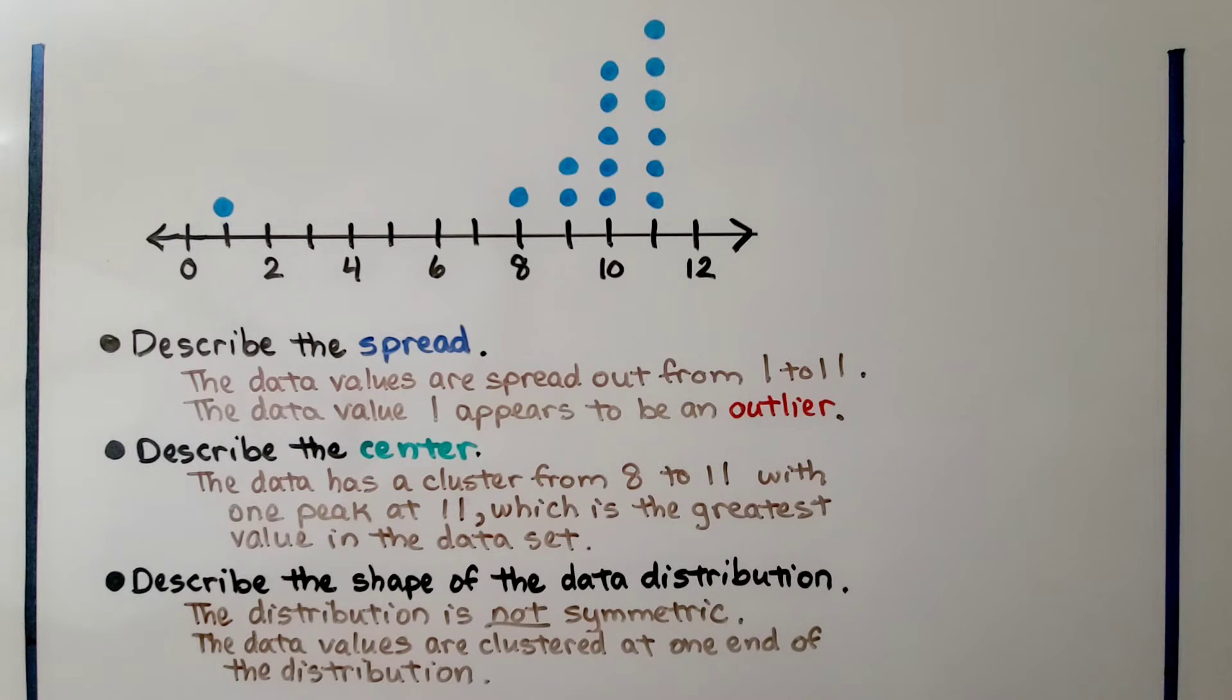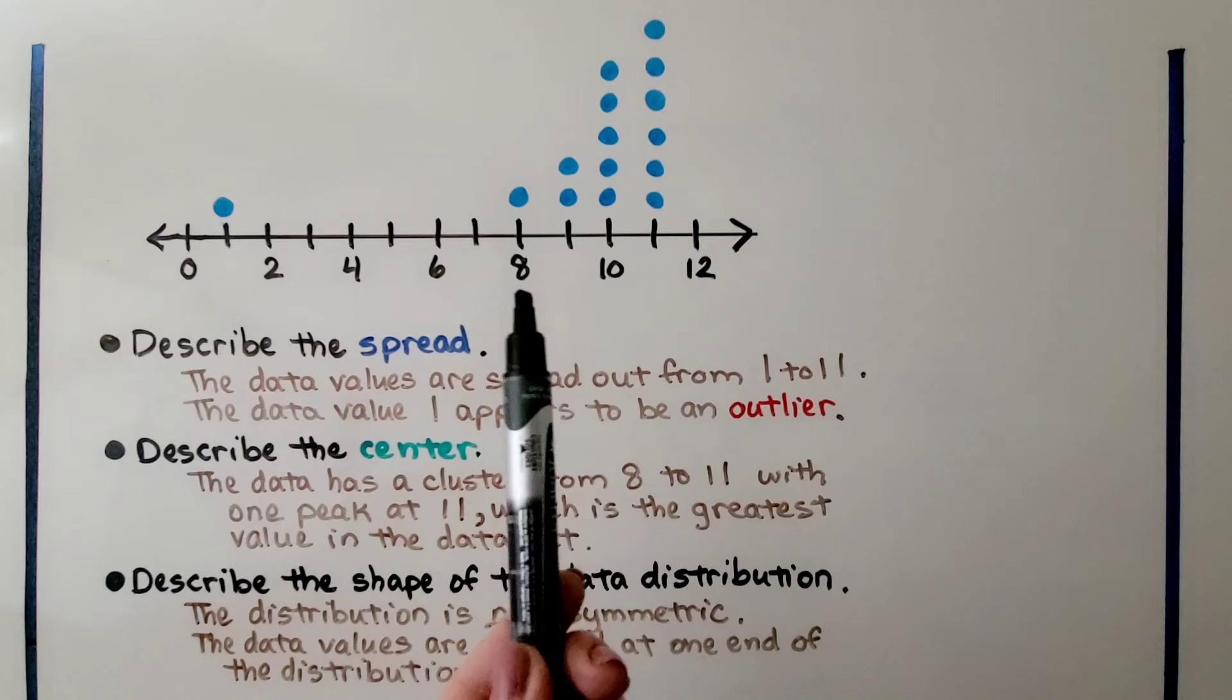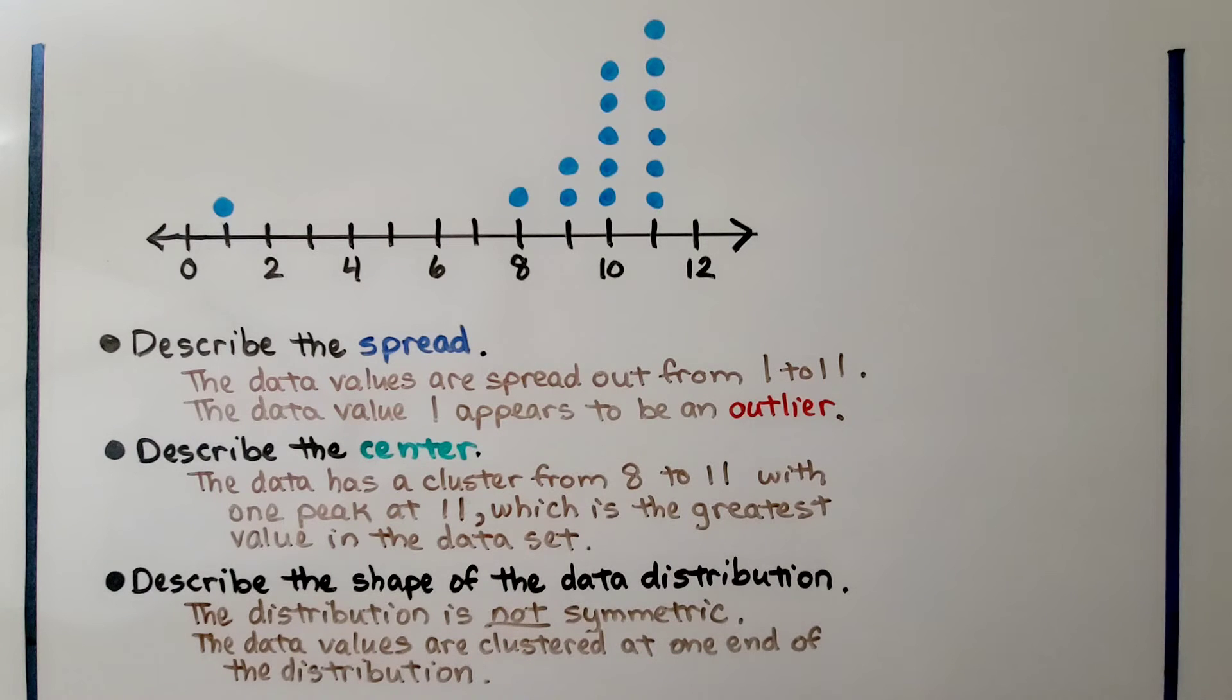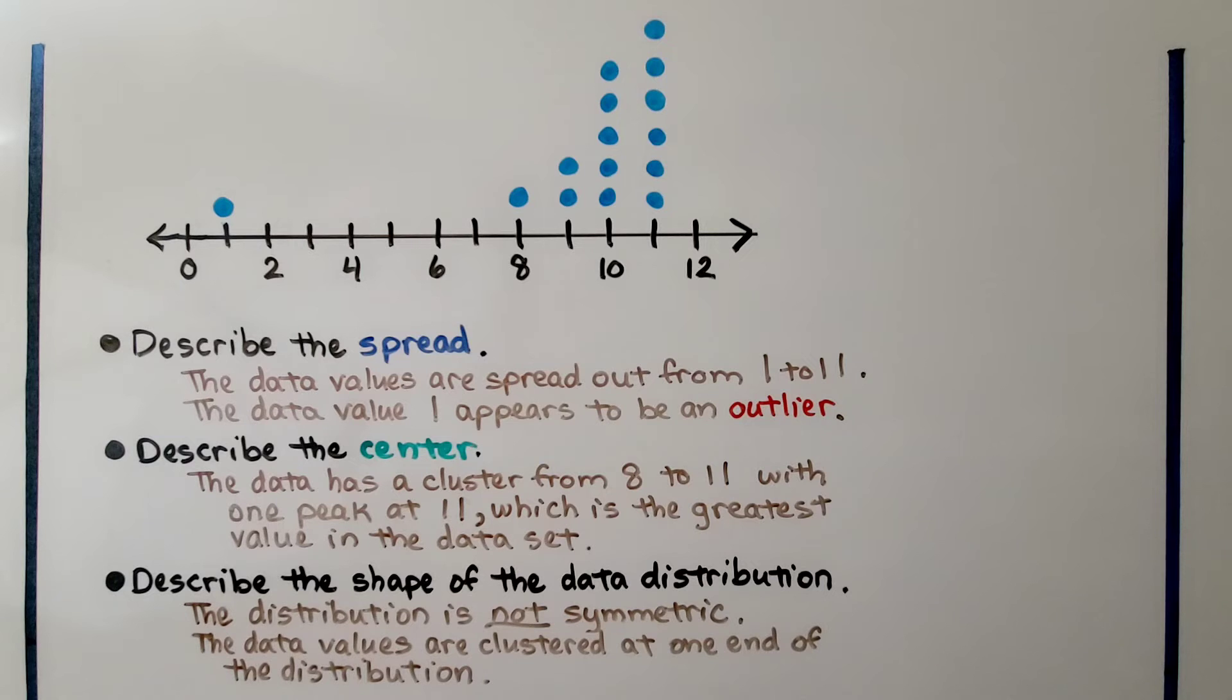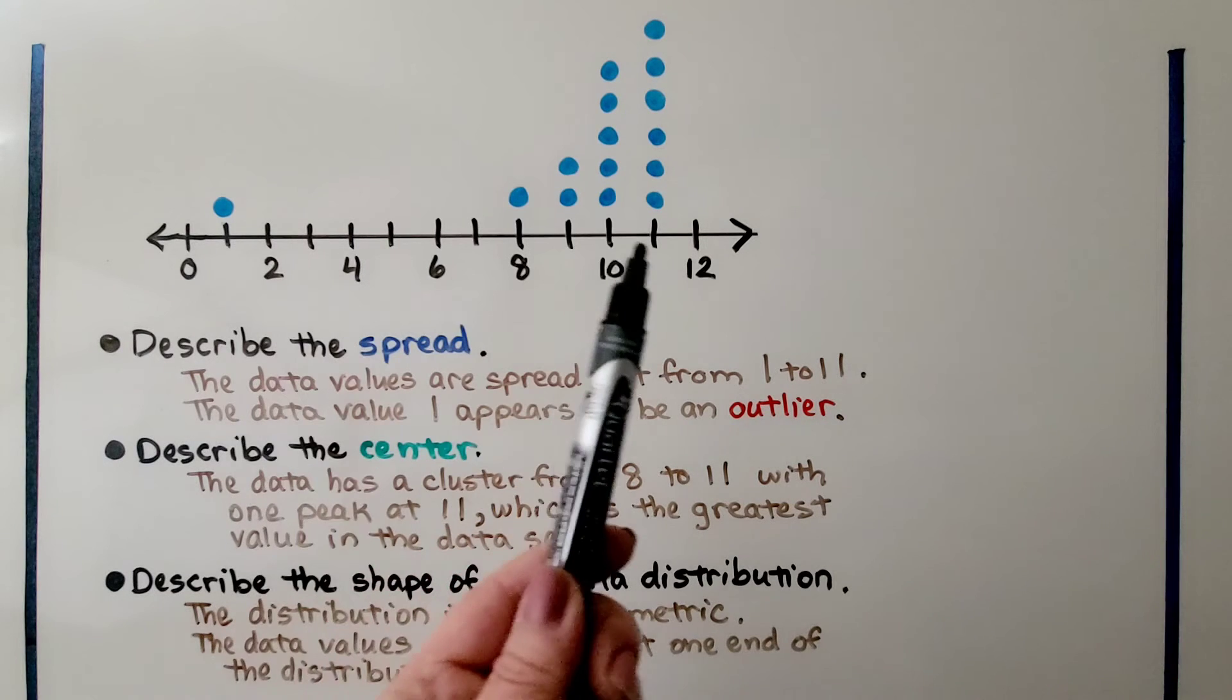Describe the center. Here, the data has a cluster from 8 to 11 with one peak at 11, which is the greatest value in the data set. Describe the shape of the data distribution. The distribution is not symmetric. The data values are clustered at one end of the distribution, so it's at one end of the number line.